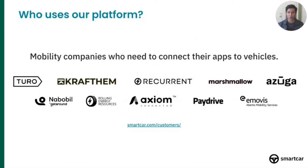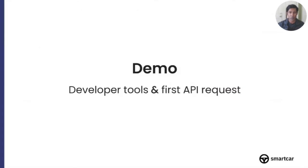Here's a quick snapshot of some developers using our product today. We have car sharing companies like Turo using our lock and unlock API to power their contactless rental experiences, and smart charging companies like Rolling Energy Resources, who use our EV APIs to start and stop the charge of a vehicle to manage its charging. From there, I want to move forward and show you a full demo of Smartcar.